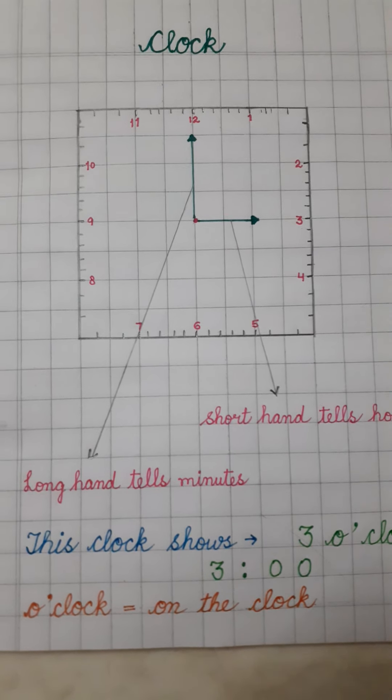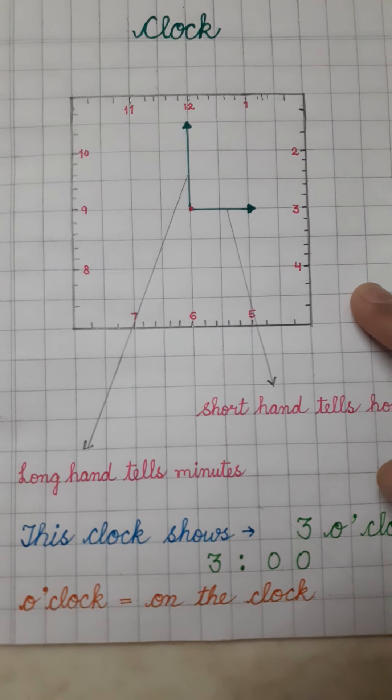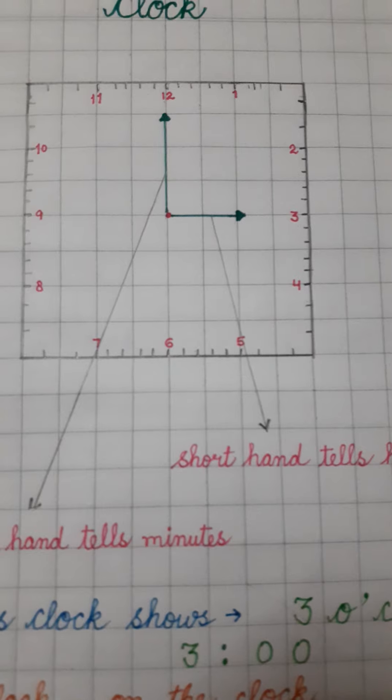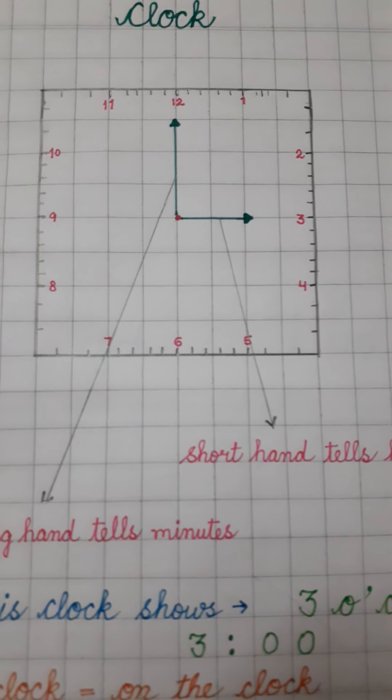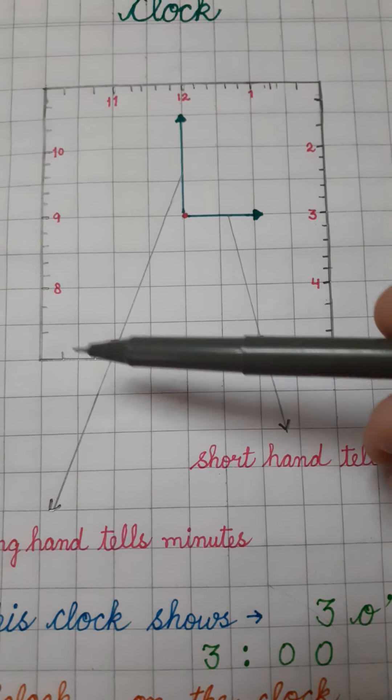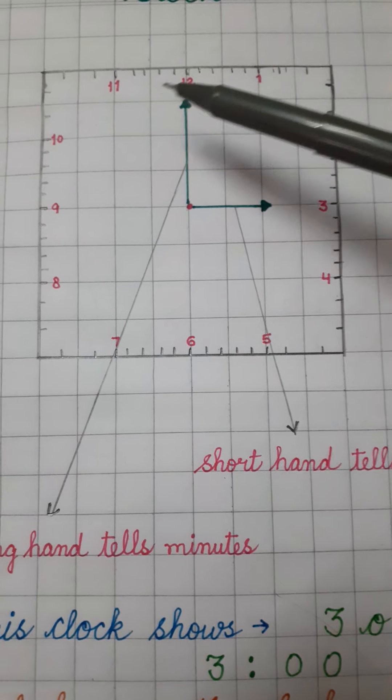Yes, I have already shown you the clock earlier. Have you seen? How many numbers are there? There are 12 numbers on the clock. 1, 2, 3, 4, 5, 6, 7, 8, 9, 10, 11, 12.